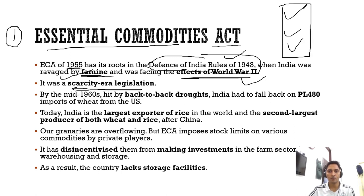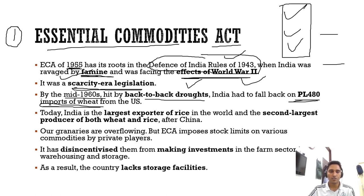Under the Essential Commodities Act, stock limits were enacted. By the mid-1960s, India was hit by back-to-back droughts and had to rely on the PL-480 program of the United States, where we imported wheat. But now, after 60 to 70 years and mainly due to the Green Revolution, circumstances have changed. Today India is the largest exporter of rice — this was even asked in previous year's prelims. India is also the second largest producer of both wheat and rice.